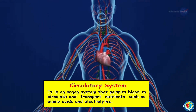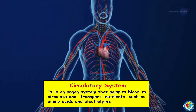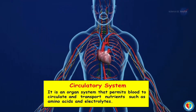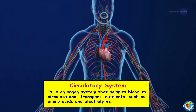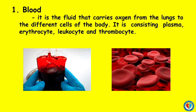It helps provide nourishment and help in fighting diseases, stabilize temperature, and maintain homeostasis. Here are the parts of the circulatory system and their functions. The first part is the blood.